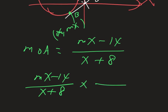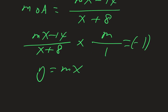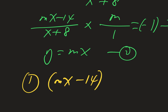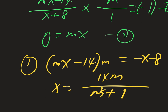This gradient, multiplied by gradient m, gives minus one, since the radius is perpendicular to the tangent. So (mx - 14) × m = -(x + 8), which gives us: x(m² + 1) = 14m - 8.